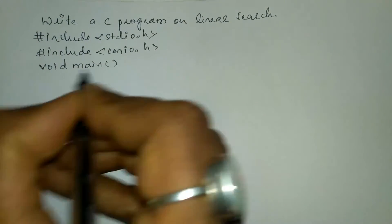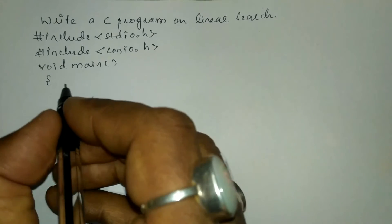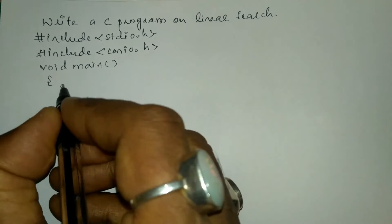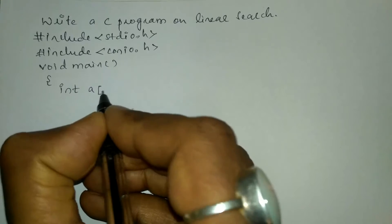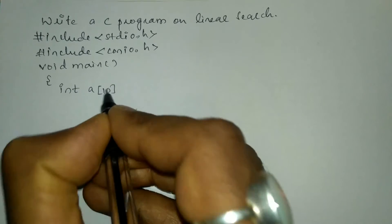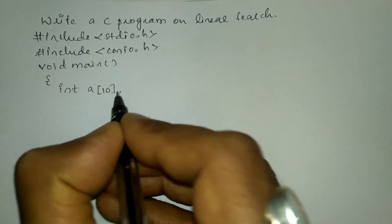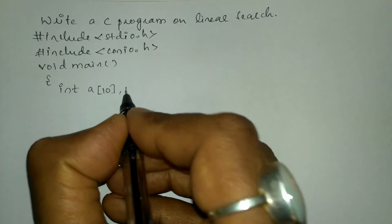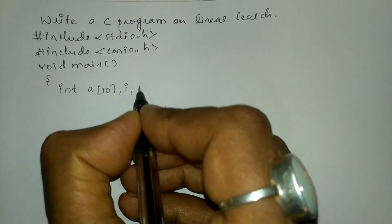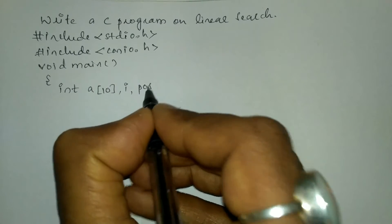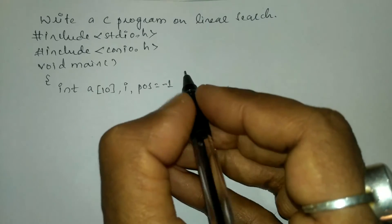Next we will write void main with an open curly brace, and here I am going to declare an array of type integer whose size is 10. Next we will write the variable i, and the next variable position is equal to minus 1.